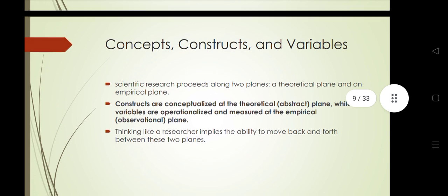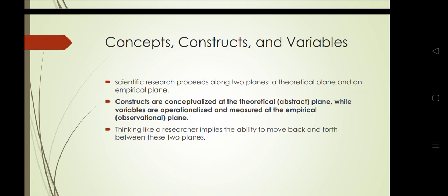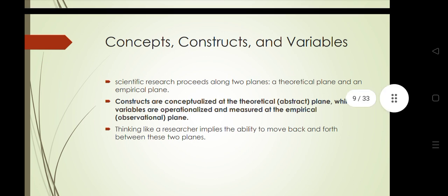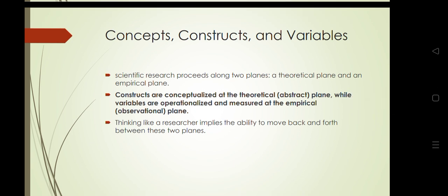Now we will discuss the types of variables. Variables are of different types, and two important types are dependent and independent variables. As the name indicates, a dependent variable is something that depends on another variable — specifically, it depends on the independent variable.